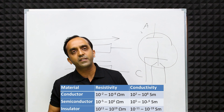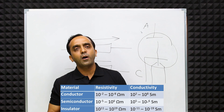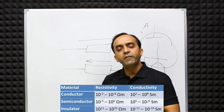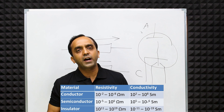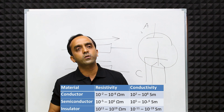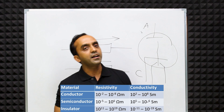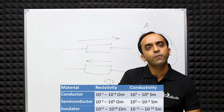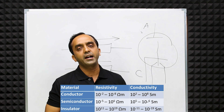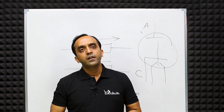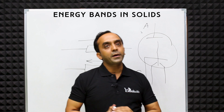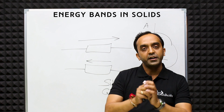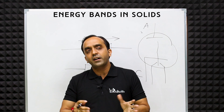On the basis of resistivity, if we classify materials: a conductor has resistivity in the range of 10⁻² to 10⁻⁸ ohm-meter; a semiconductor has resistivity in the range of 10⁻⁵ to 10⁻⁶ ohm-meter; and an insulator has resistivity in the range of 10¹¹ to 10¹⁹ ohm-meter.